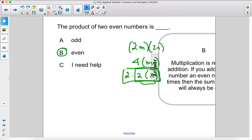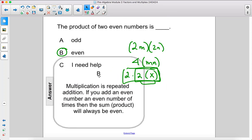The answer is b. Multiplication is just repeated addition. If you add an even number an even number of times, then the sum will always be even. So there's another explanation.